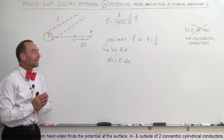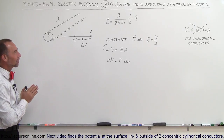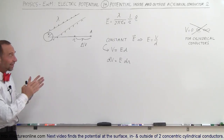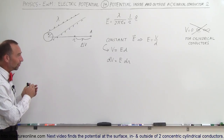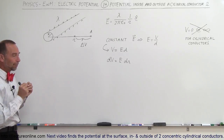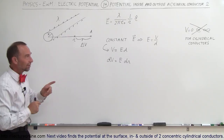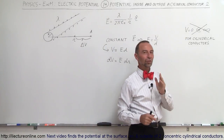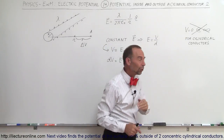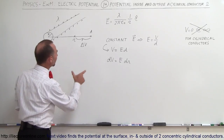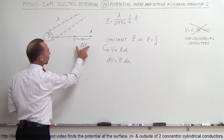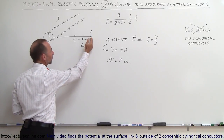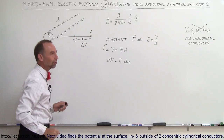Welcome to ElectronLine. Here we're going to talk about how to find the potential outside, inside, and on the surface of a cylindrical conductor. Remember, in the previous video we realized that we could not assume that at infinity the potential is equal to zero. So what we're going to do instead is find the potential difference, delta V, between some fixed reference point and the point of interest.